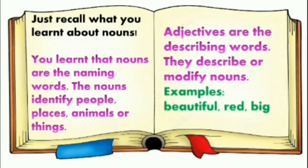Let's quickly recall some examples. When I say nouns are the names of people, what do I mean? Now let's discuss. When I say that nouns are the names of people, I mean words like boy, father, girl, engineer, doctor, Sarah, mama, baby, friends. The names given to all the people are nouns.